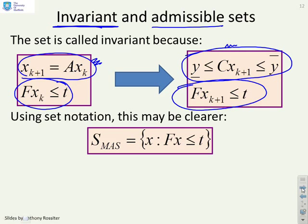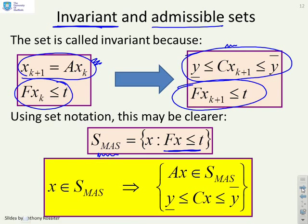Now, people often use terminology maximal admissible set to say how's the biggest set I can get. So MAS stands for maximal admissible set. So if I use a set notation to say let's assume this is defined as x, which satisfies fx less than or equal to t, then what we're actually looking for is we're saying if x is in S_MAS, then ax must also be in S_MAS, and we must also satisfy our constraints.